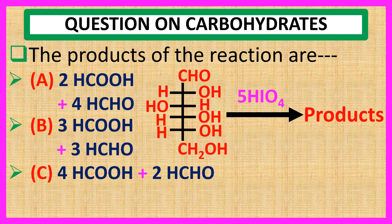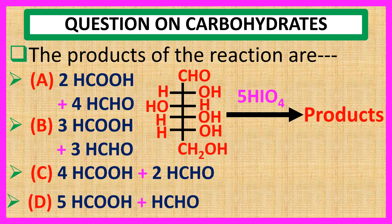C — 4 molecules of formic acid plus 2 molecules of formaldehyde. And D — 5 molecules of formic acid plus 1 molecule of formaldehyde.